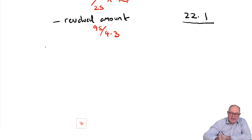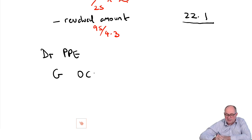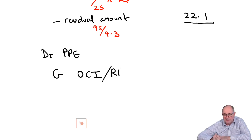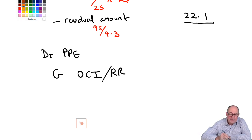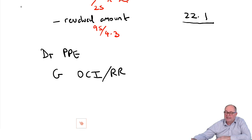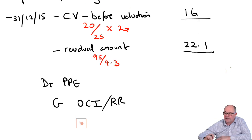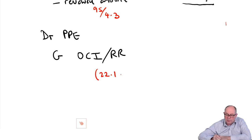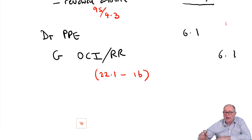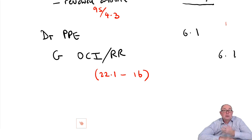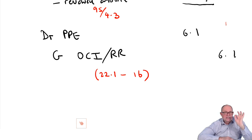So if I was doing a journal on that day, I would increase the value of the PPE and increase OCI — or put something into revaluation reserve. The difference in carrying value is the difference between 16 and 22.1, and that's a difference of 6.1 million dollars. Notice with foreign assets: you buy the asset, you translate it into dollars, and thereafter it stays in your books in dollars.